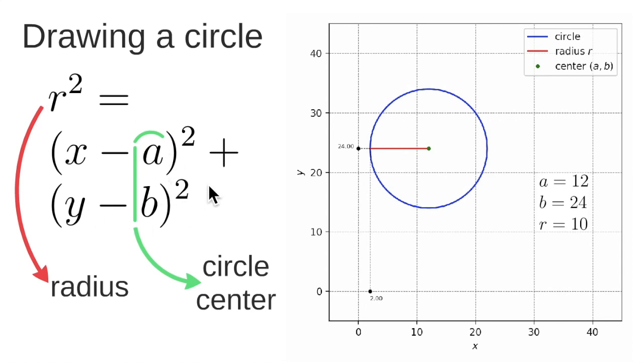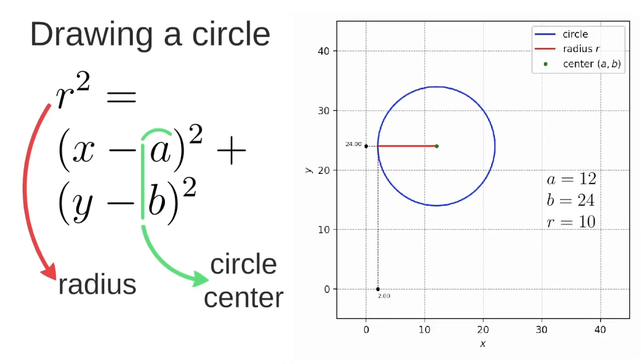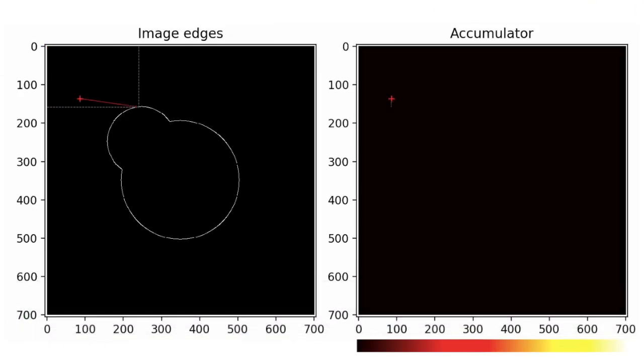Given the image edges which are computed using the Hough Transform we will draw one circle for every edge that we detect in the original image. And we will draw this circle using the previous equation in this accumulator.